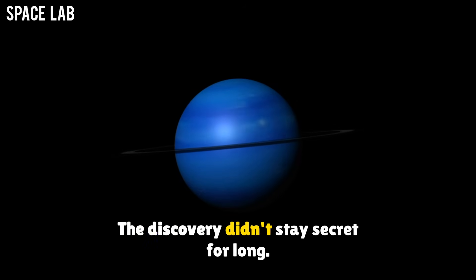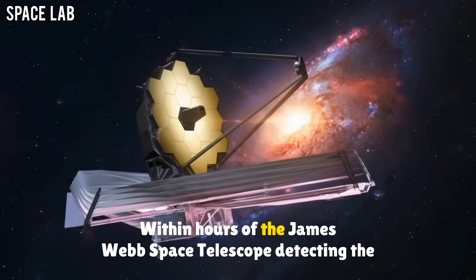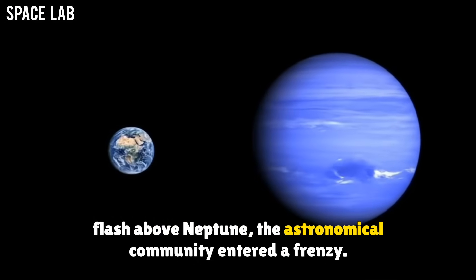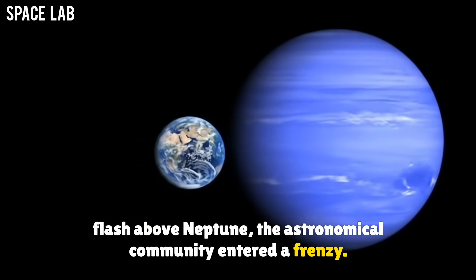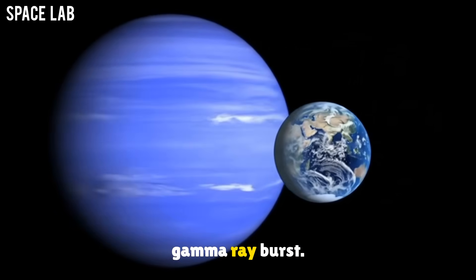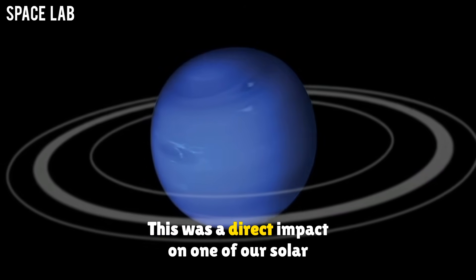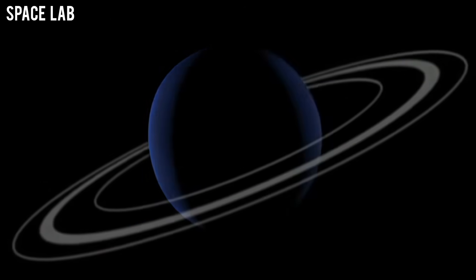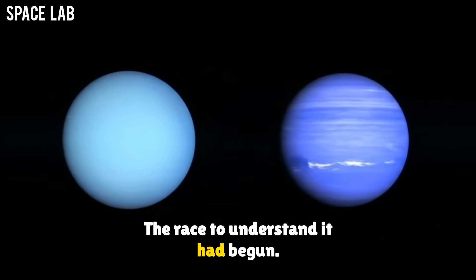The discovery didn't stay secret for long. Within hours of the James Webb Space Telescope detecting the flash above Neptune, the astronomical community entered a frenzy. This was not just another comet sighting or a distant gamma-ray burst. This was a direct impact on one of our solar system's planets, happening in real time. The race to understand it had begun.